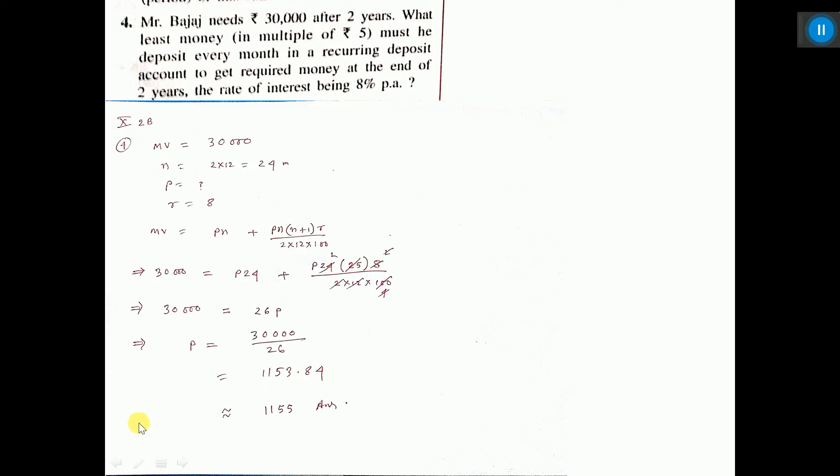So MV equals 30,000. Here it is given time is two years. Two years means 2 into 12, that is 24 months. We have to find P, that is per month deposition. Rate of interest given is 8%.